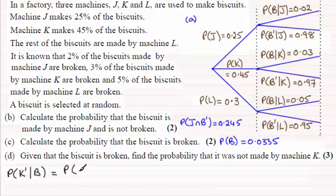So in other words, it's the probability of K prime and B—biscuits are broken—and then it's always divided by the probability of the given event. So this is the probability of B.